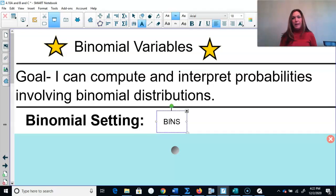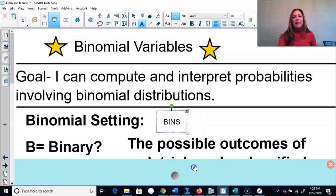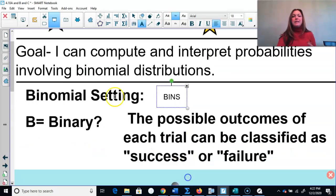What does BINS stand for? B is the first one. B stands for binary. Binary means the possible outcomes of each trial can be classified as a success or a failure. Like if I would flip a coin, I would get heads or tails. If I shoot a basket, I'd make it or I'd miss it. Binary - we either have a success or a failure.